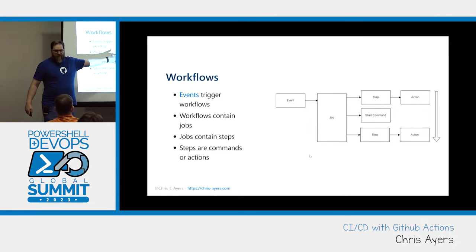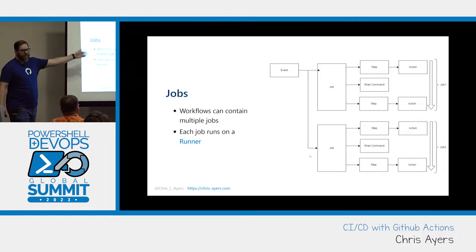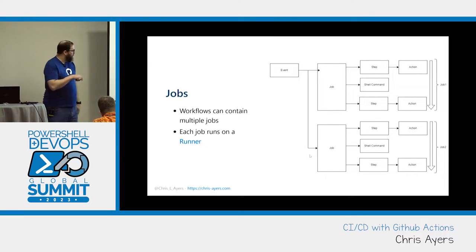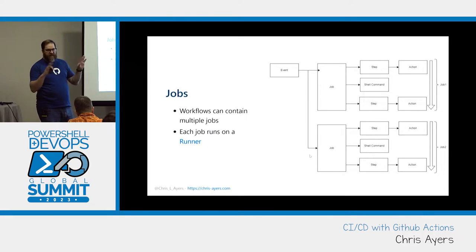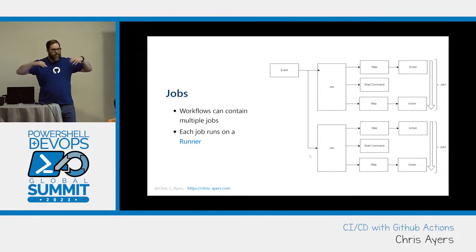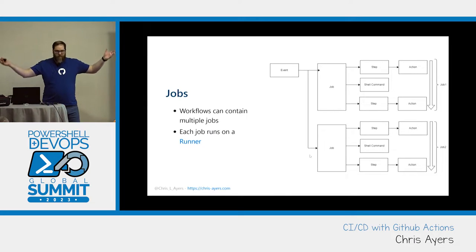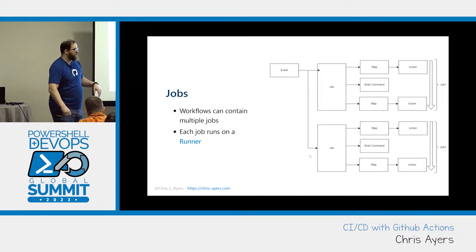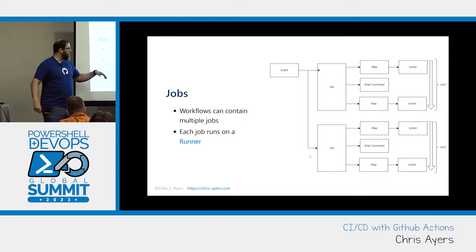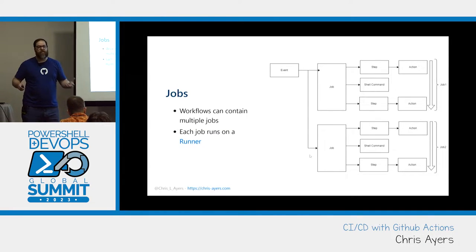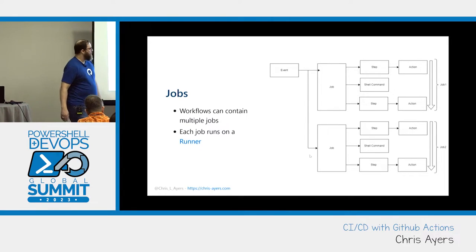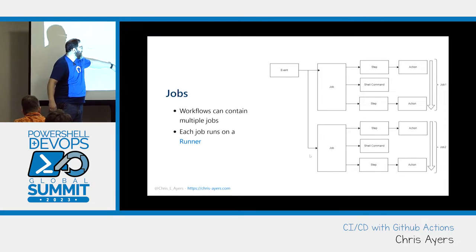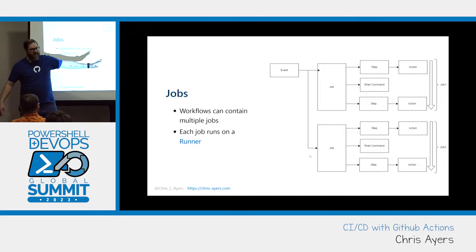What if we want more than one job? We want that CD job, that build job, we want to run tests. Well, we could have more than one job. These jobs, when you kick them off — if you don't say anything about dependencies, it'll try to run them both at the same time. You can have multiple jobs in your workflow, multiple workflows. It'll just try to kick them all off in parallel, as many parallel jobs as you have. Jobs run in parallel; steps run sequentially inside the job.